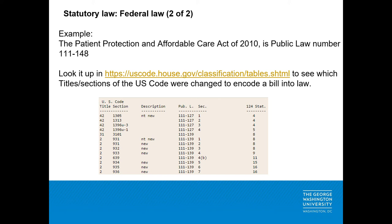Once you know the public law number for a piece of enacted federal legislation, you can consult the table of classifications for public laws to identify what title, chapter, or section numbers of the US code were amended to incorporate the new wording. These are published on the website uscode.house.gov.